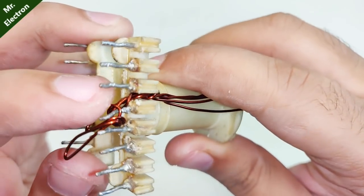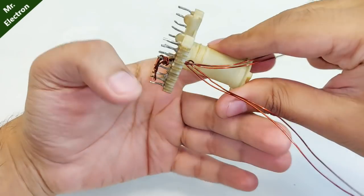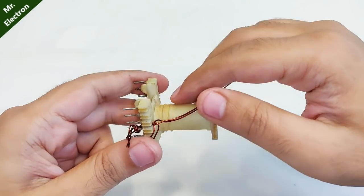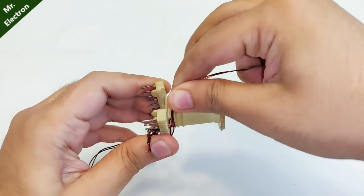Take the first pair of wires and start turning it in the clockwise direction until the wire finishes off. One turn completes over here.